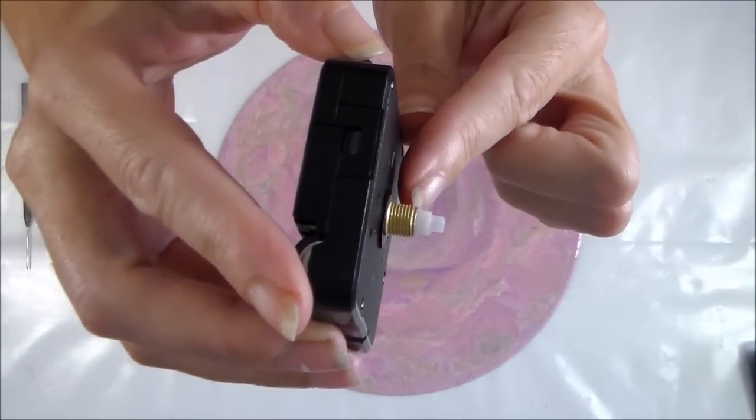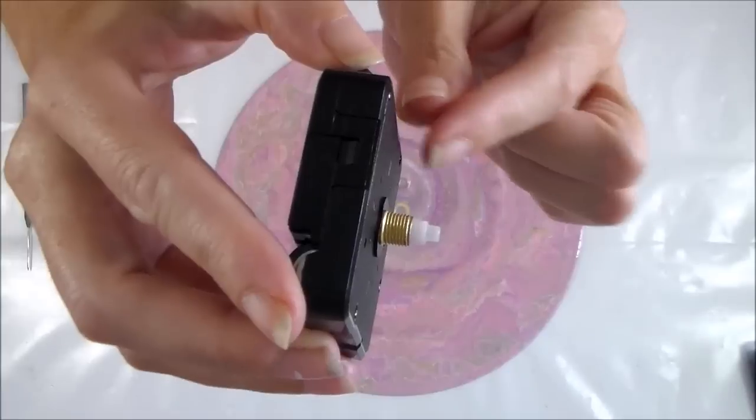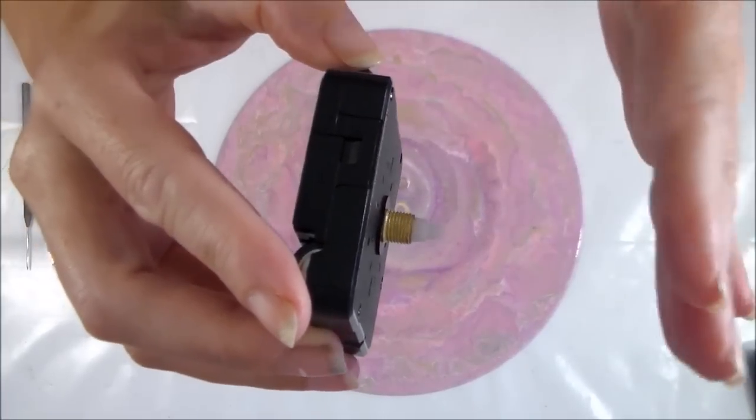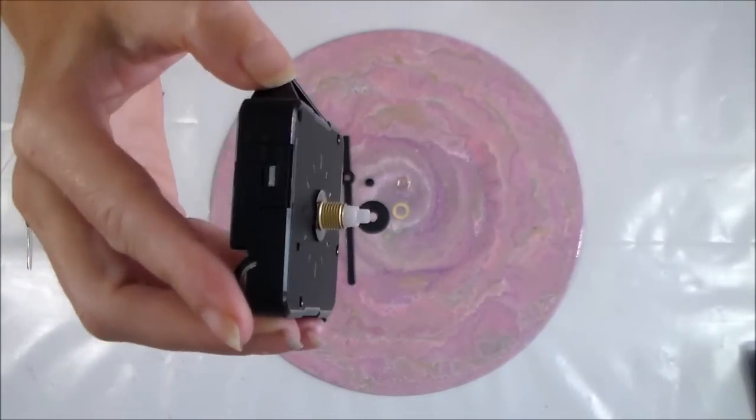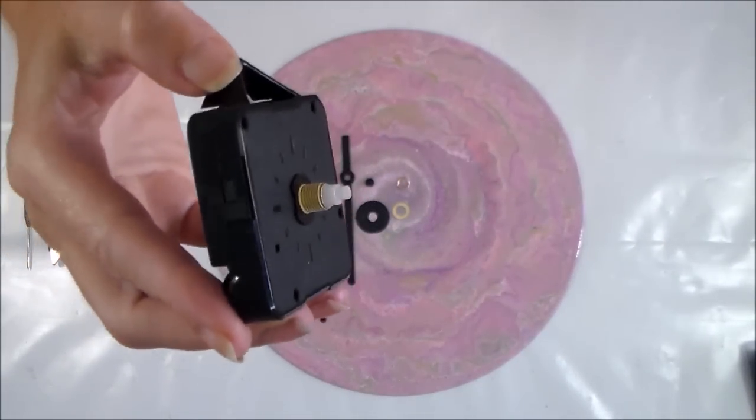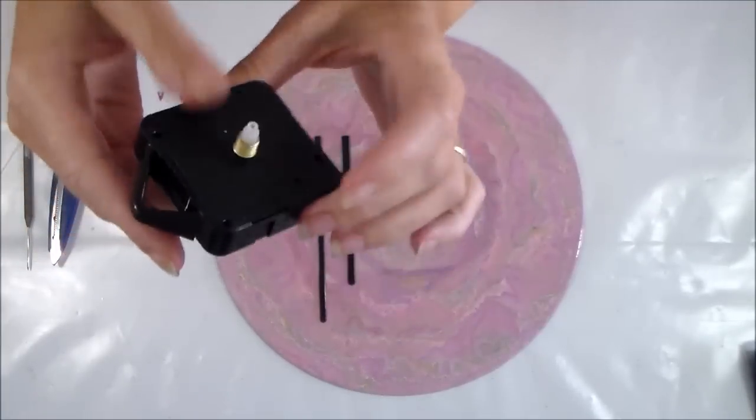Otherwise if you have a really long spindle then your hands will be way out here and they'll be far from the front of your record. So if you're looking for a clock kit, go for the short quarter inch spindle length.